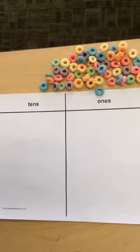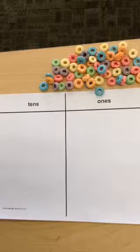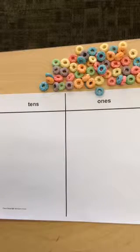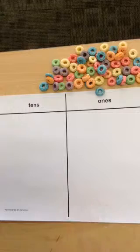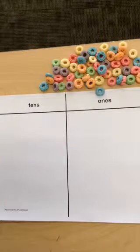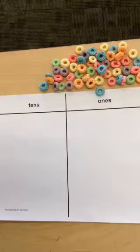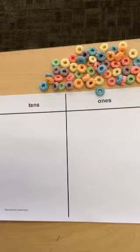Hi boys and girls. Today we're going to practice place value. You're going to be making groups of tens and ones using the cereal from your baggie and your place value mat that looks like this — it's in your packet. If your cereal got smashed on the way home, just use any cereal from home; it doesn't really matter. In your bundle, you are going to find a number and you need to show that number with cereal.